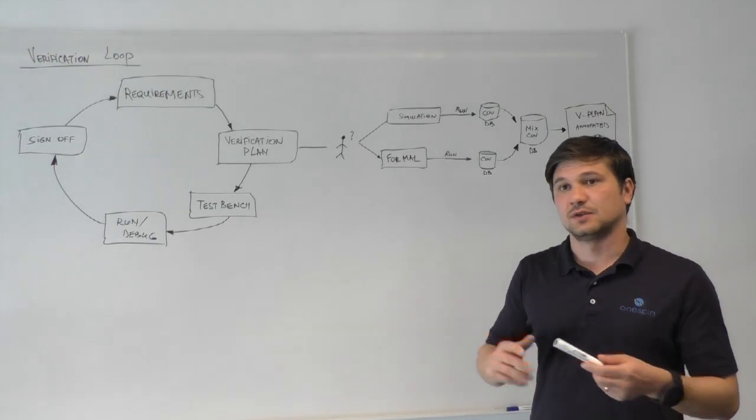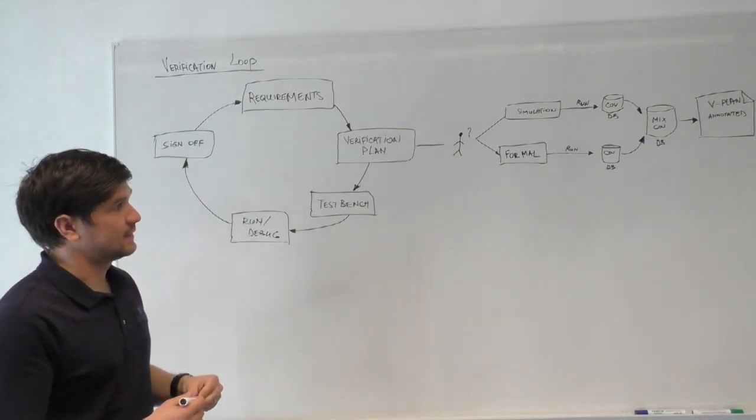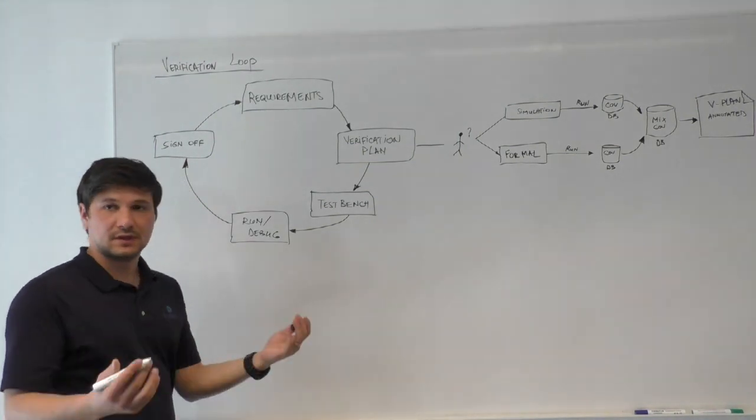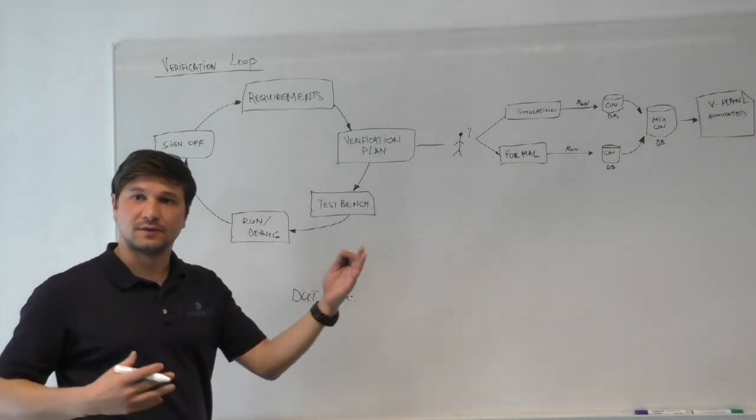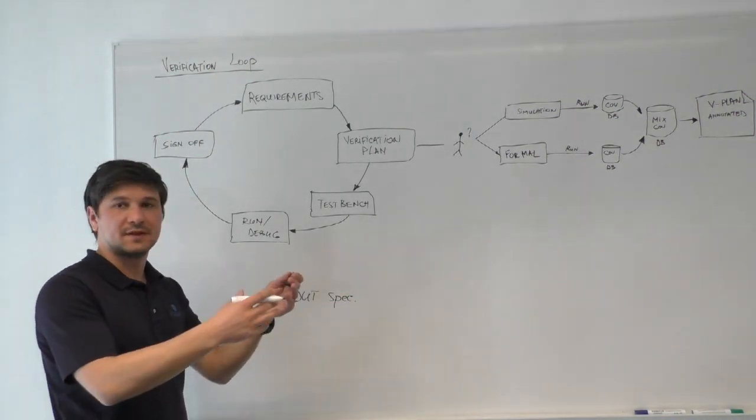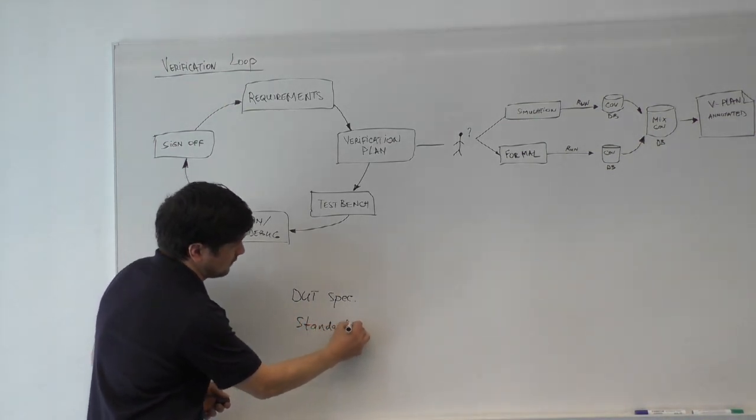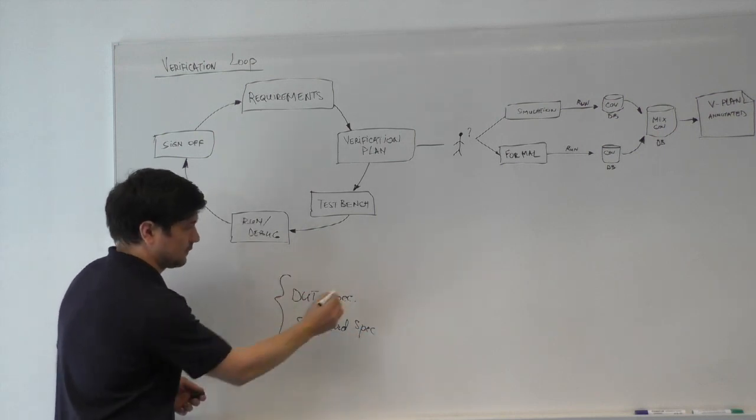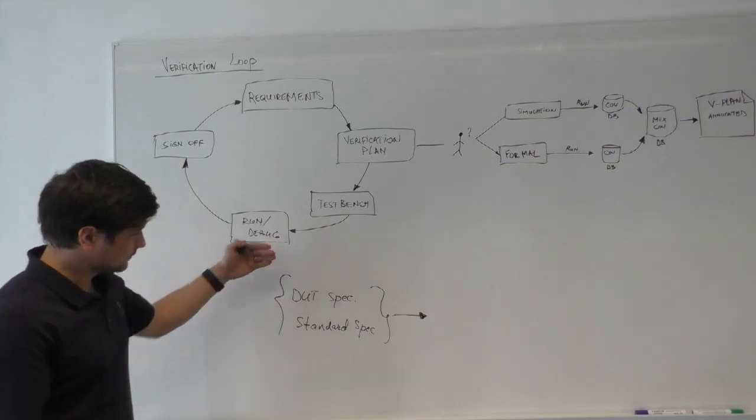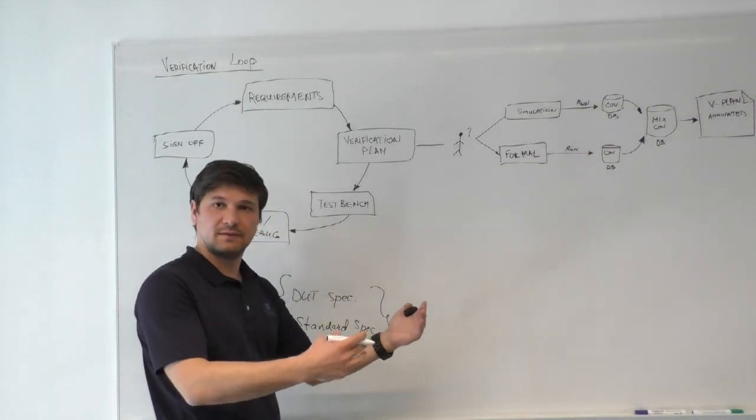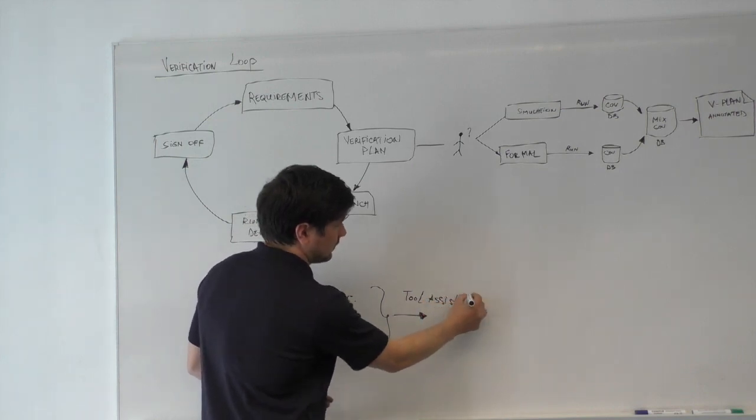How do you get from requirements to the verification plan? Getting from requirements to verification plan is not a fully automated process. Usually, you get from the designers the design specification, which consists of papers describing the full functionality of the design. If the design incorporates standard interfaces like protocols such as AMBA, you also get these standard specs. These files go and get analyzed by verification engineers, for which the verification engineer develops the verification plan. This can be assisted by a tool or done manually.